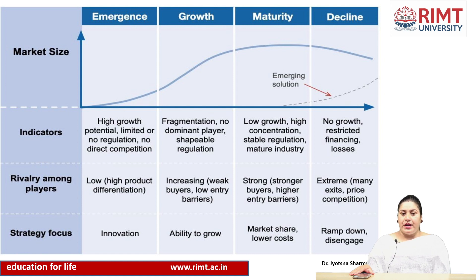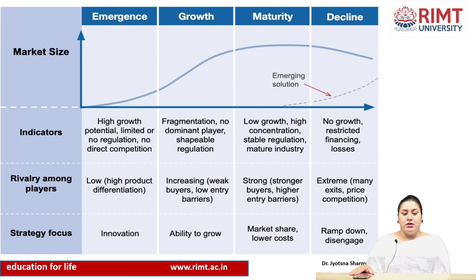Now the strategy focus. In the emergence stage, the innovation strategy should be focused on — the firm introducing their product should come up with a new and different product, so innovation and research and development is suggested. In the growth stage, the main strategy should be a growth strategy where the organization focuses on abilities to grow their product and services and cater to new market segments. In the maturity stage, the strategy should be to increase market share and lower costs in every best possible way. In the decline stage, it is suggested that if the product is not reaping good profits or even covering its costs, a ramp-down or disengage strategy must be effectively practiced so there is no big future loss.